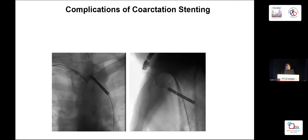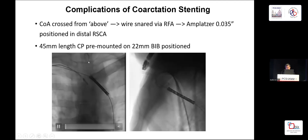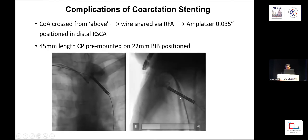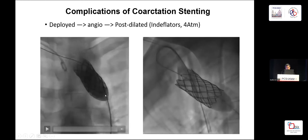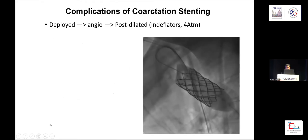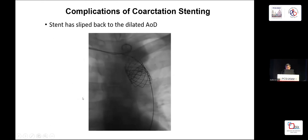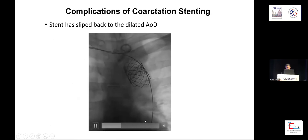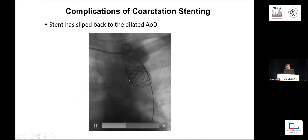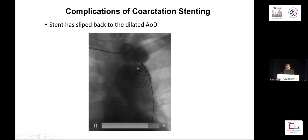We tried to put the stent — a CP stent, 45 mm length, pre-mounted. You can see the stent in the right position, it looks very beautiful. We started inflating the balloon, and you can see the stent inflating very nicely.